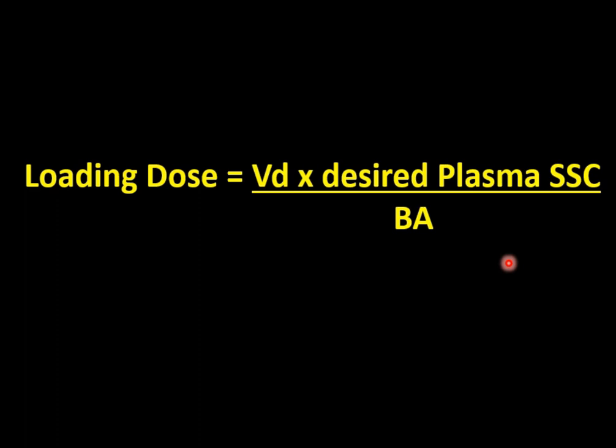There are two clinical predictors for loading dose. First is volume of distribution — if the drug has a wider volume of distribution, a much higher loading dose is required; if narrower, a smaller loading dose is needed. In the case of bioavailability, the situation is the reverse — if bioavailability is more, less loading dose is required. We calculate the loading dose based on desired plasma steady state concentration, and this loading dose is followed by a maintenance dose for drugs with a very large plasma half-life.